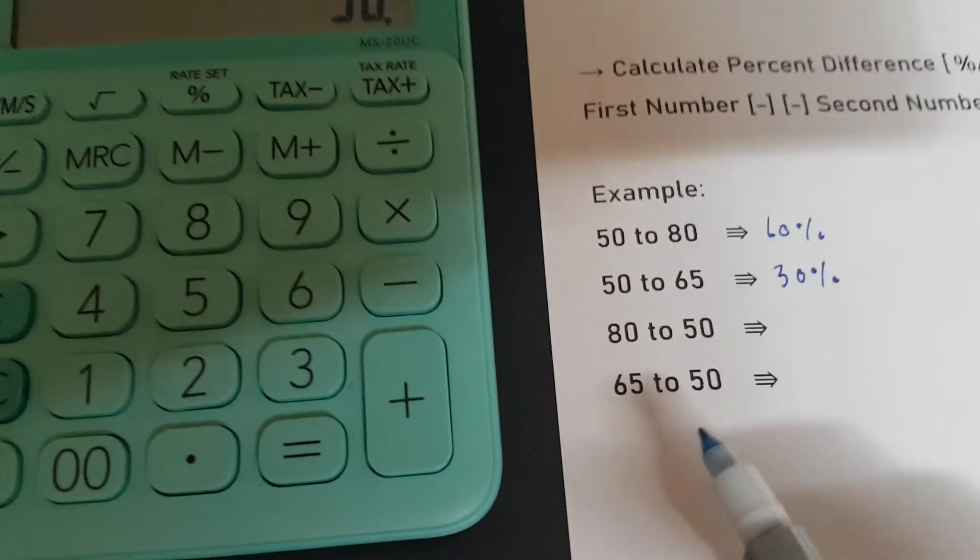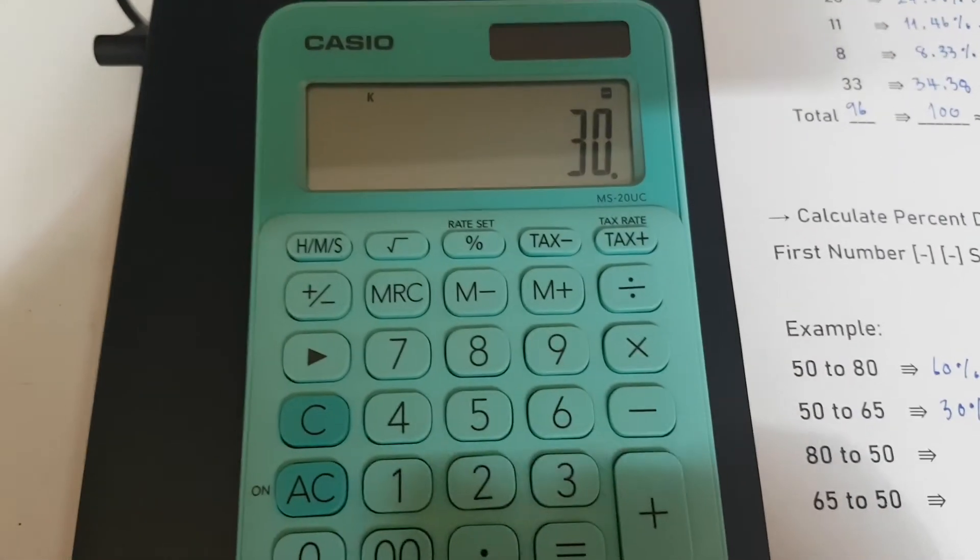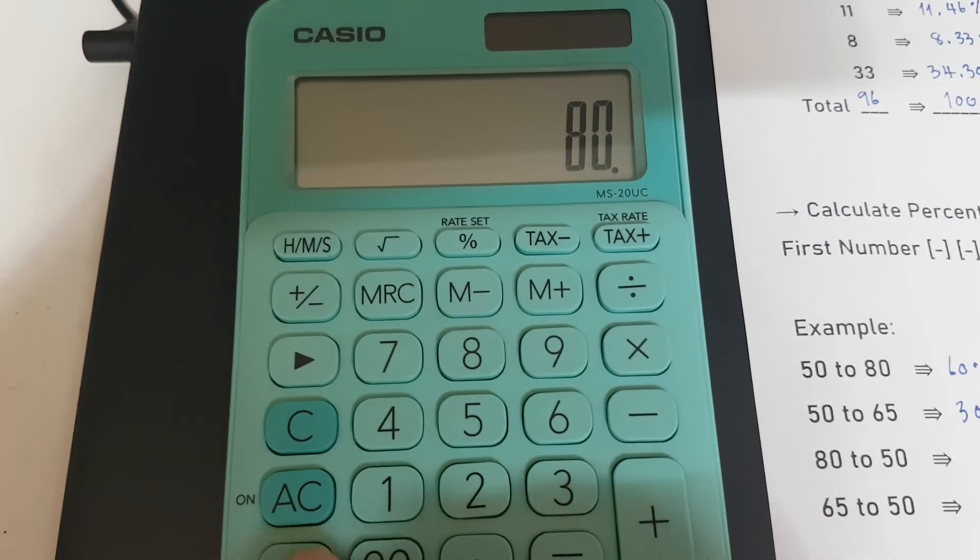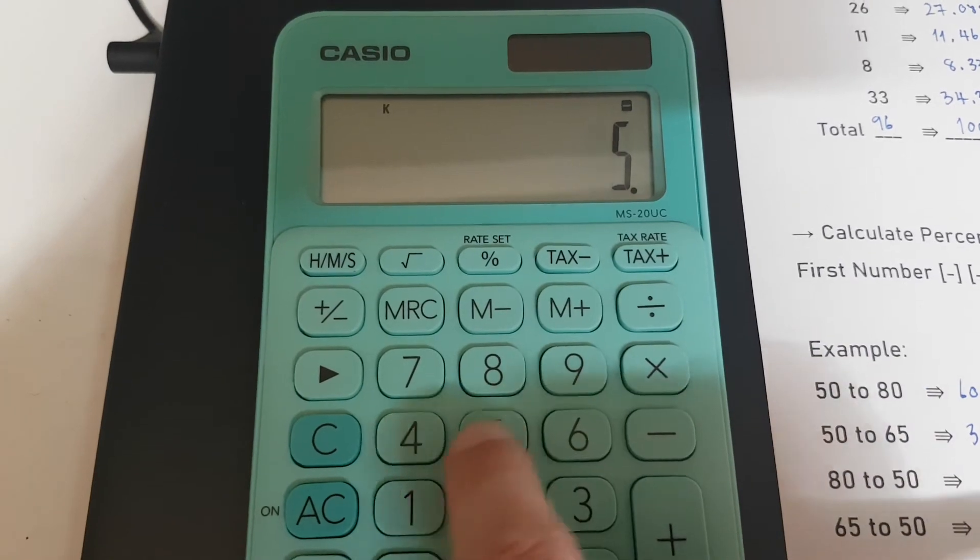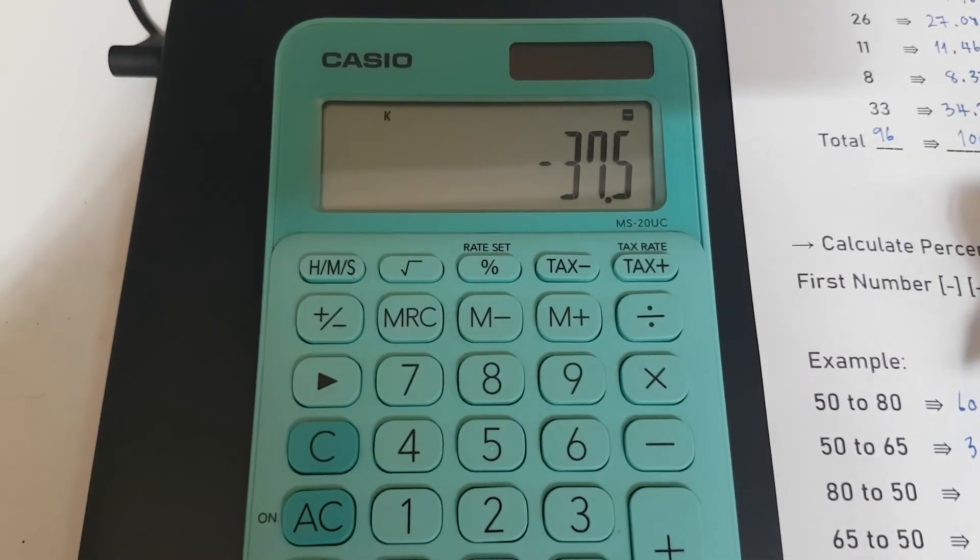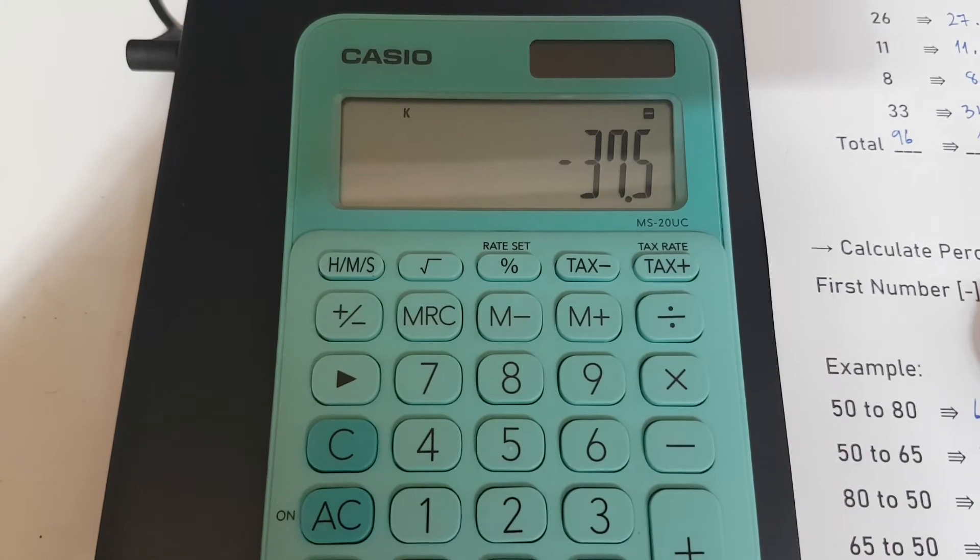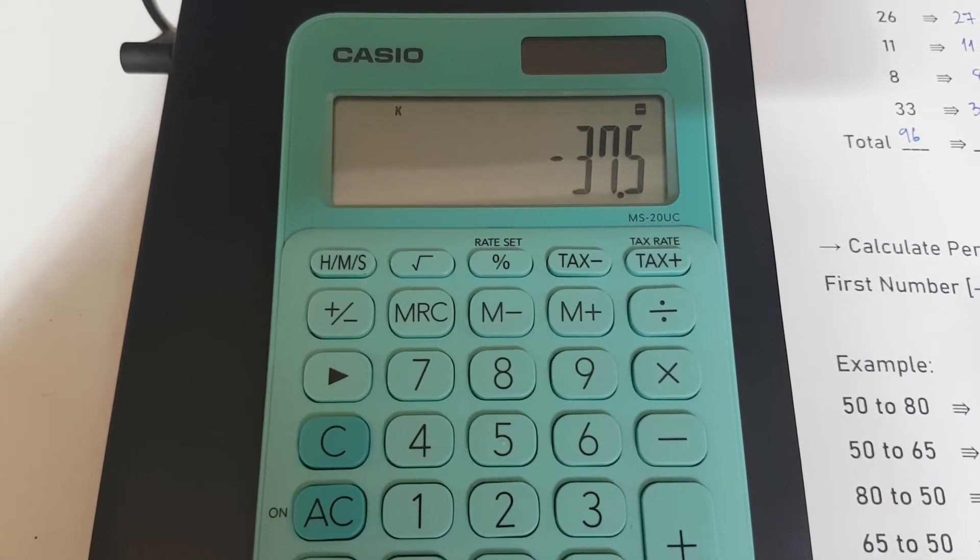How about 80 to 50? 80, minus minus, 50 percent. So that's going to be negative 37.5%.